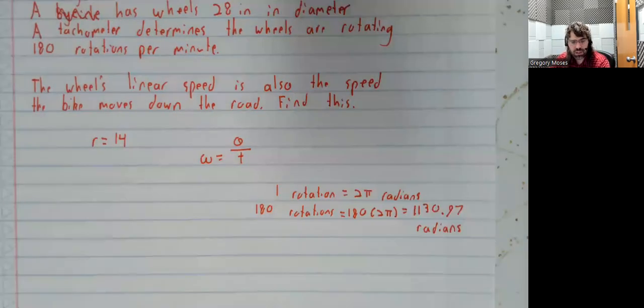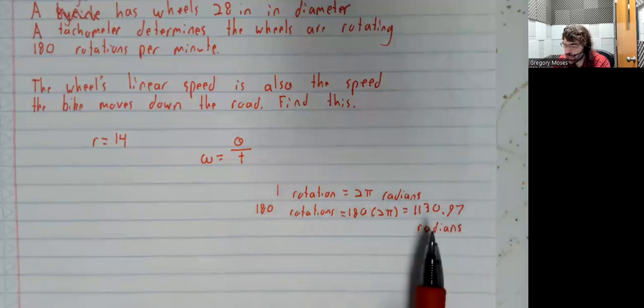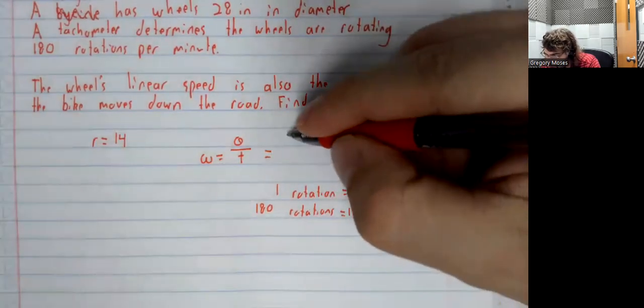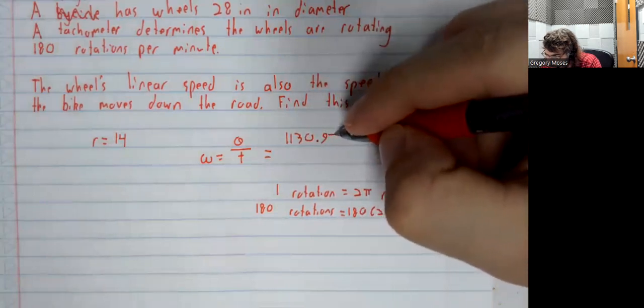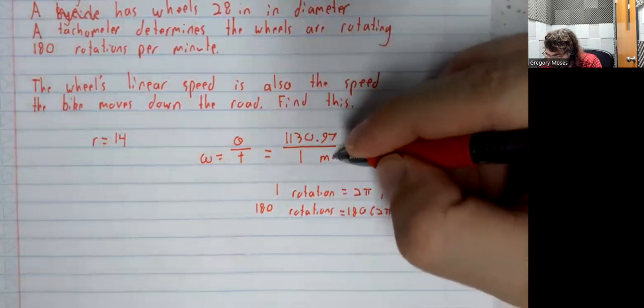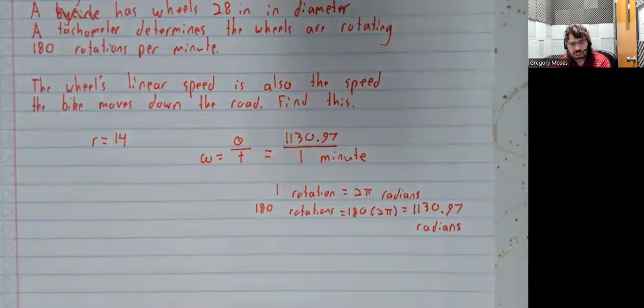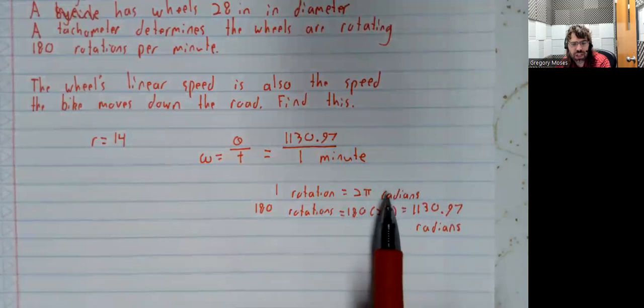We find that when the wheel has rotated 180 times, it's made a rotation of 1130.97 radians. So, we are now going to plug this into omega.